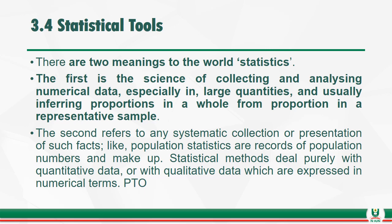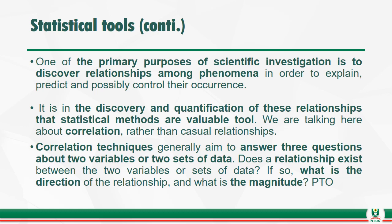There are two meanings to the word 'statistics.' The first is the science of collecting and analyzing numerical data, especially in large quantities, and usually inferring proportions in a whole population from proportions in a representative sample. The second refers to any systematic collection or representation of such facts, like population statistics which are records of population numbers and makeup. Statistical methods deal purely with quantitative data or with qualitative data expressed in numerical terms. One of the primary purposes of scientific investigation is to discover relationships among phenomena in order to explain and predict occurrences.